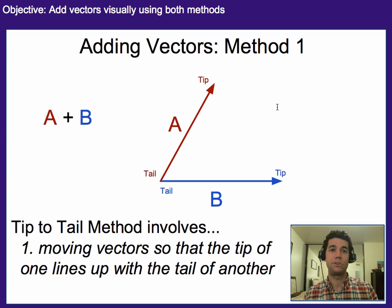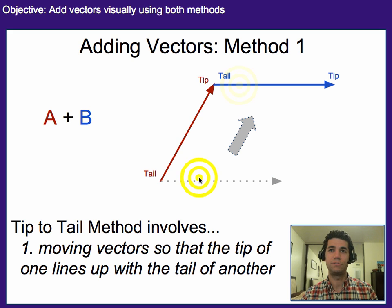So adding vectors. There are two methods, and method one is the tip-to-tail method. It works like this: We take a vector, or there could be multiple, but we move them so the tip of one vector is lined up with the tail of another vector. Now oftentimes, if we're looking at A plus B in this case, we'll draw them tail-to-tail and show the angle between them, but that doesn't help us for adding them together. So the first thing we need to do is move this vector up, redraw it up here, so we now have the tip of one vector next to the tail of another vector.